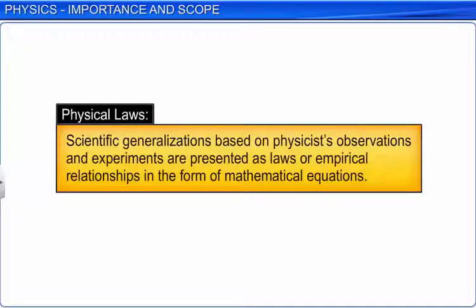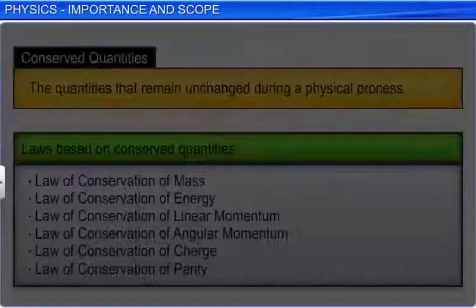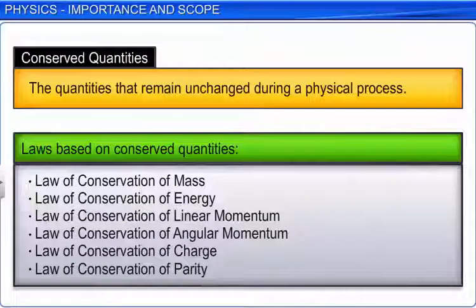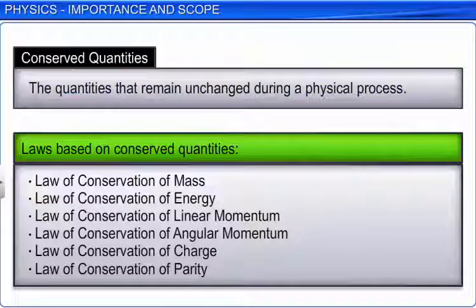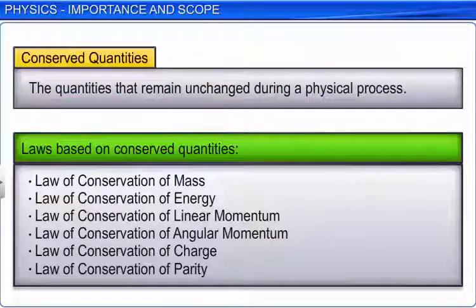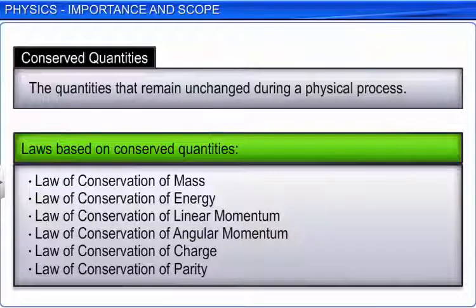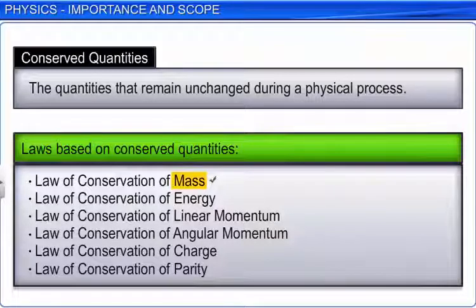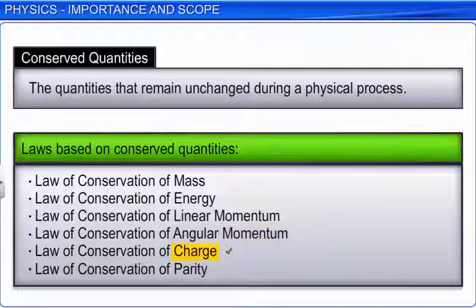Apart from finding the facts through observation and experiments, physicists always try to summarize these facts as laws or empirical relations in form of mathematical equations. These are known as physical laws. Most of these laws are based on some special quantities that remain unchanged in a process, which are known as conserved quantities. Some of the general conservation laws in nature include the laws of conservation of mass, energy, linear momentum, angular momentum, charge, and parity.